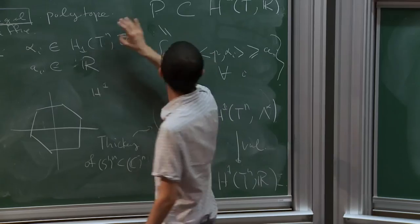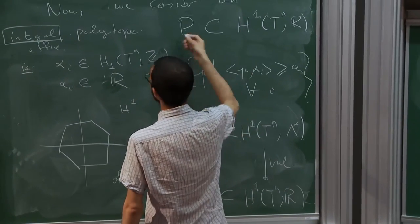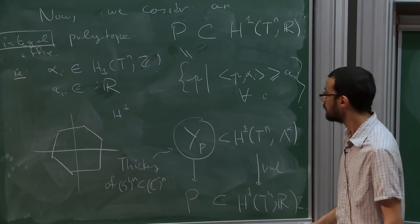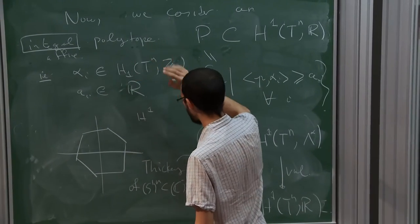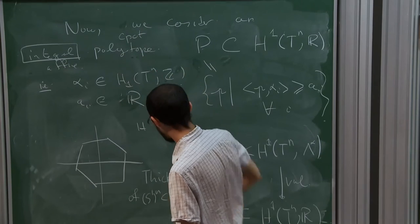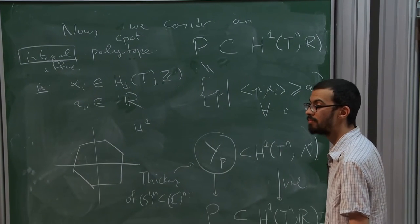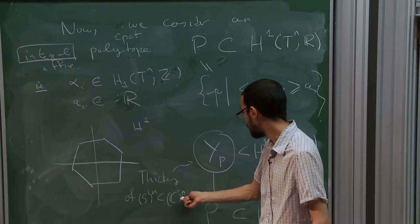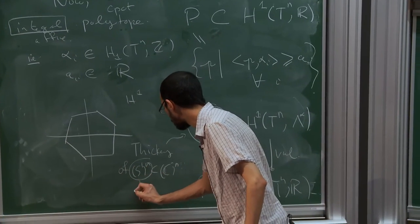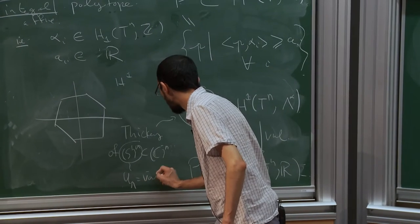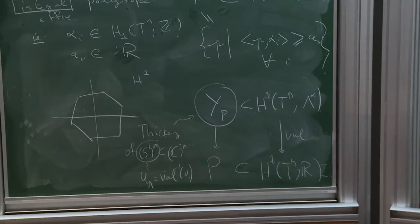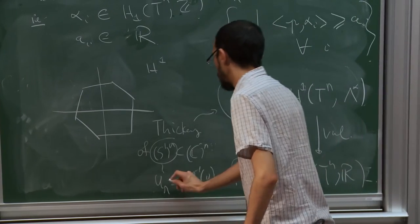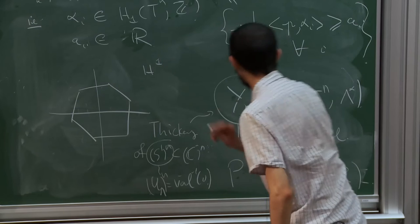We can now define Y_P to be the preimage under the valuation map of P. The valuation from lambda* to R induces a natural map on cohomology groups. Y_P is an analog of a thickening of the real torus inside (C*)^n. The unitary elements U_lambda^n correspond to S^1^n, which lives inside (C*)^n as the zero locus of the valuation — so U_lambda^n lives inside Y_P.